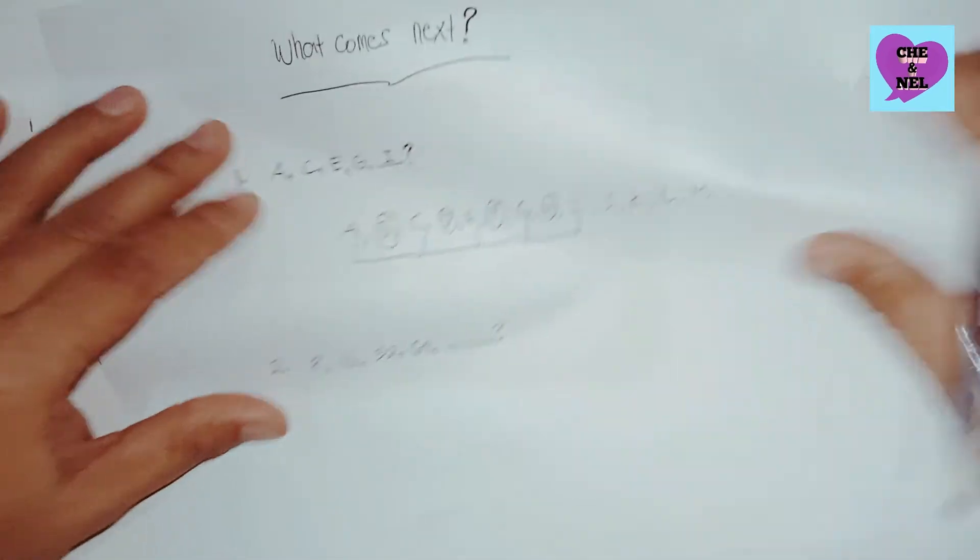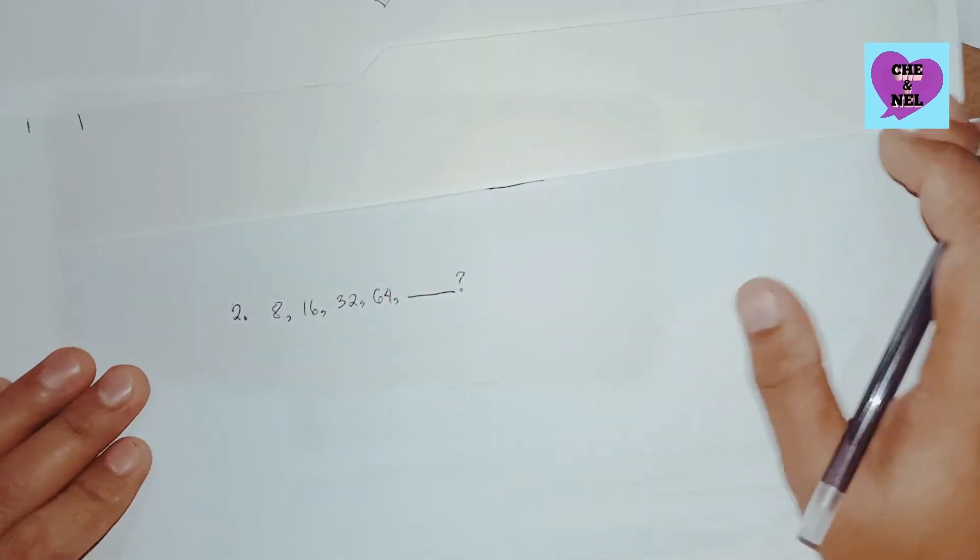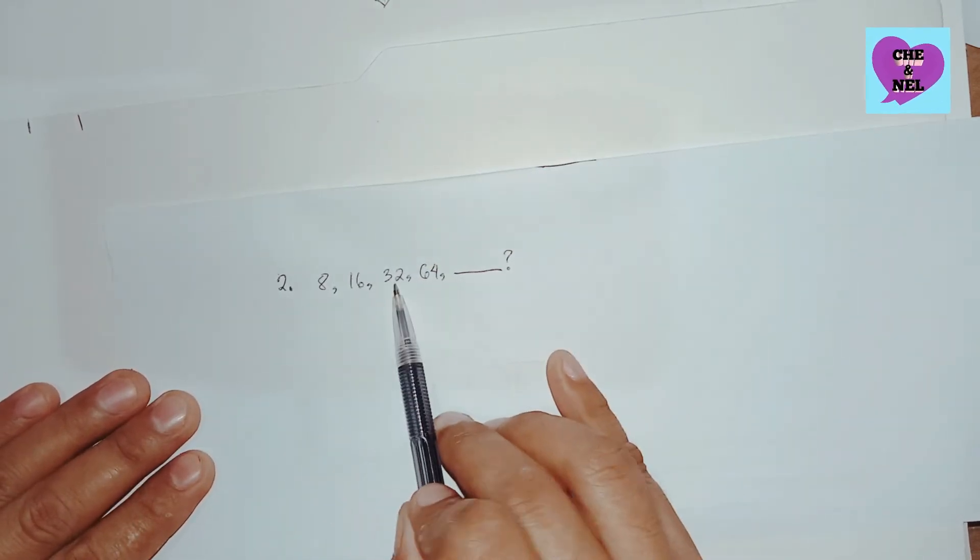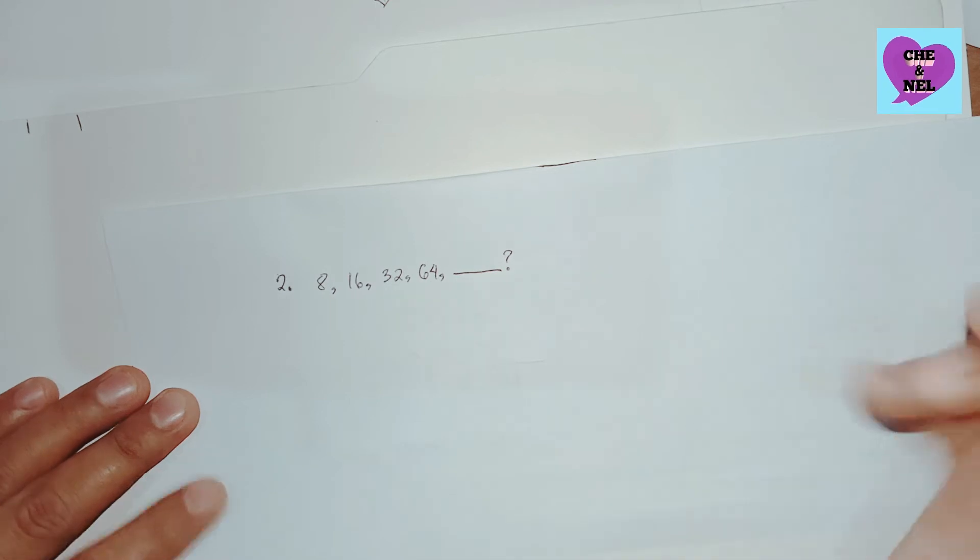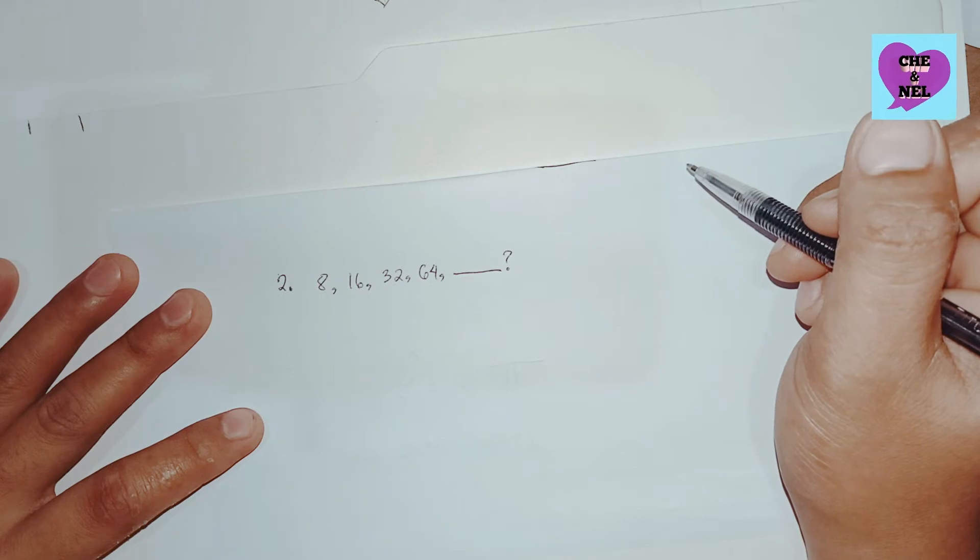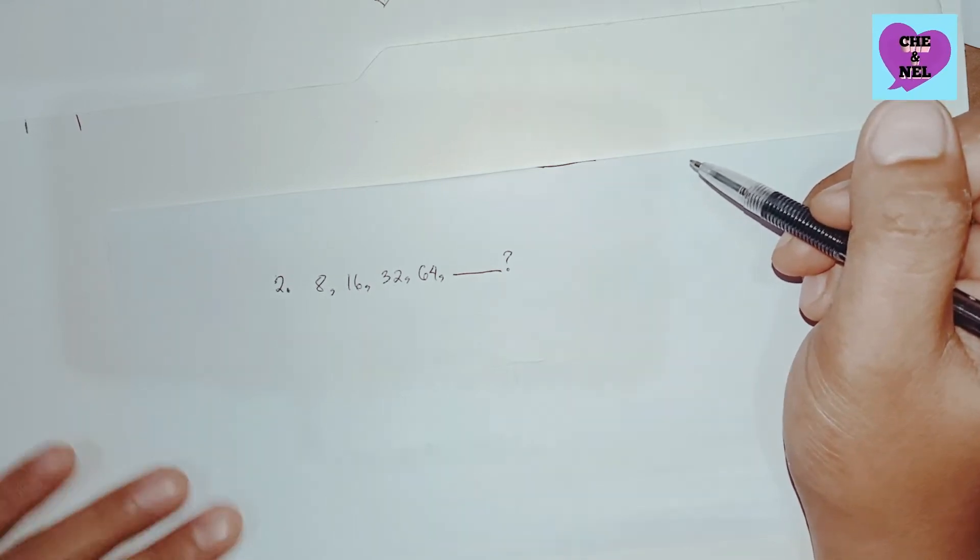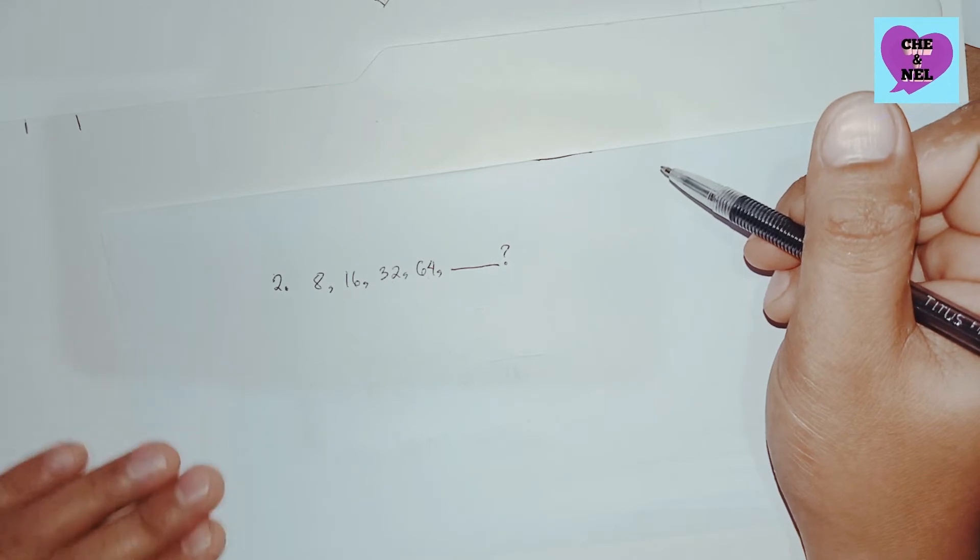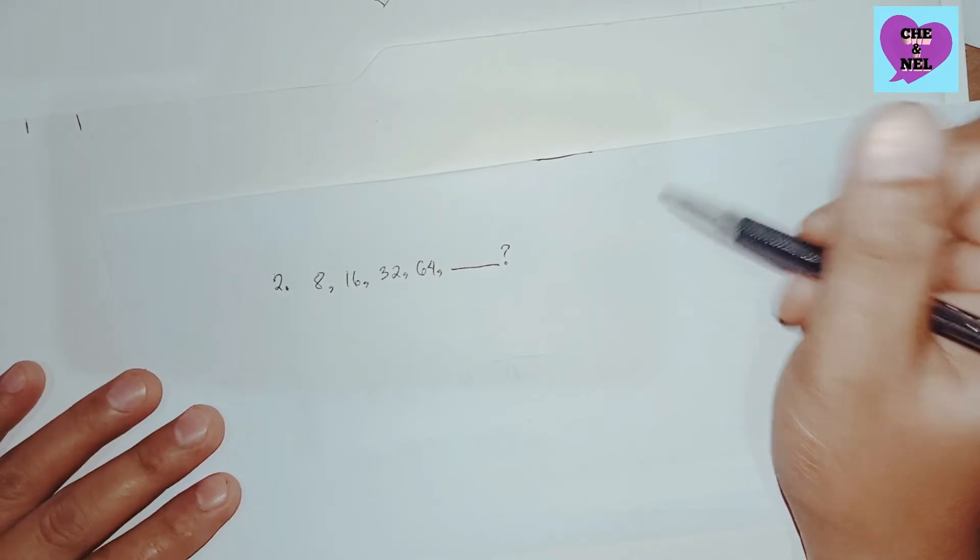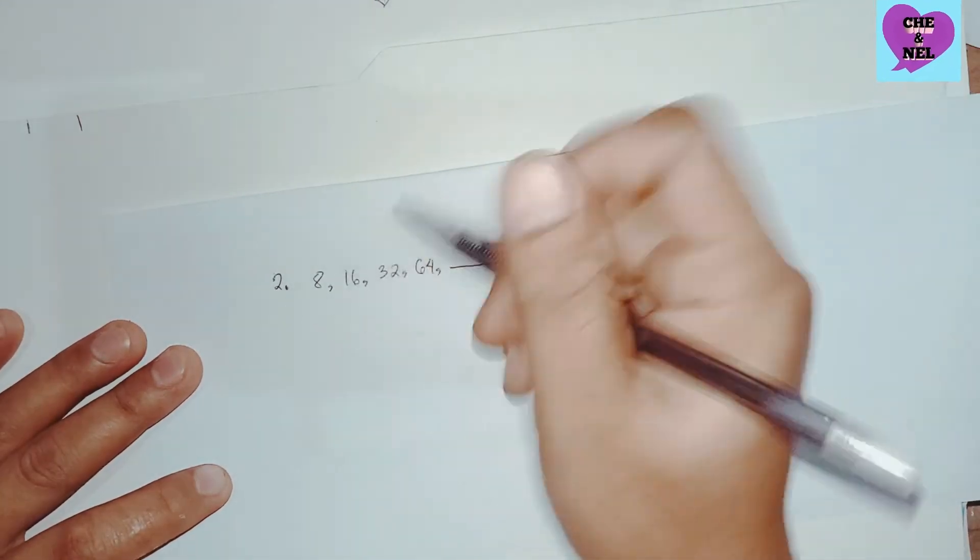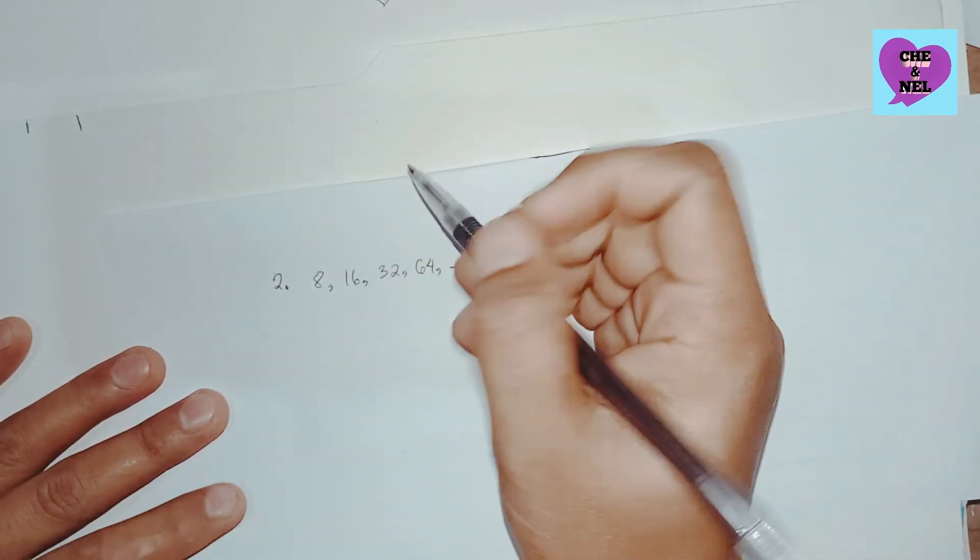In number two problem we have 8, 16, 32, 64, blank. We will try to figure out what pattern is being applied in this sequence. Let's have a certain way of attempting the pattern. The first thing to do is find the common difference.